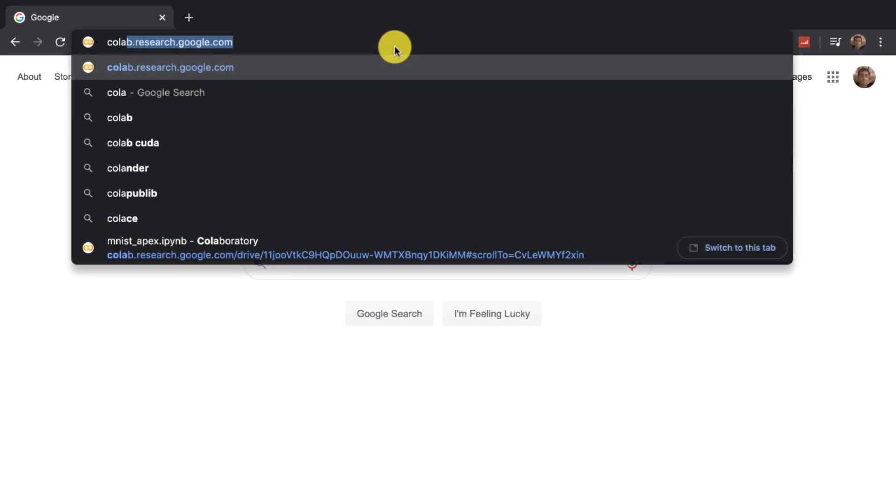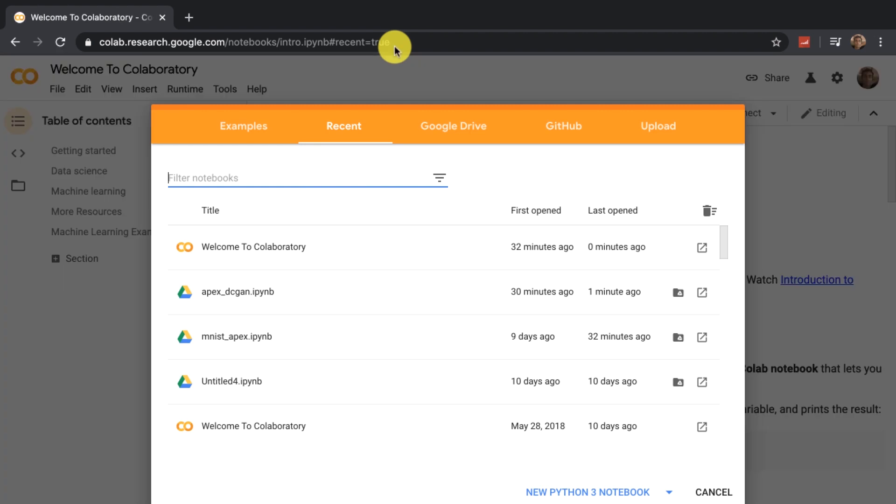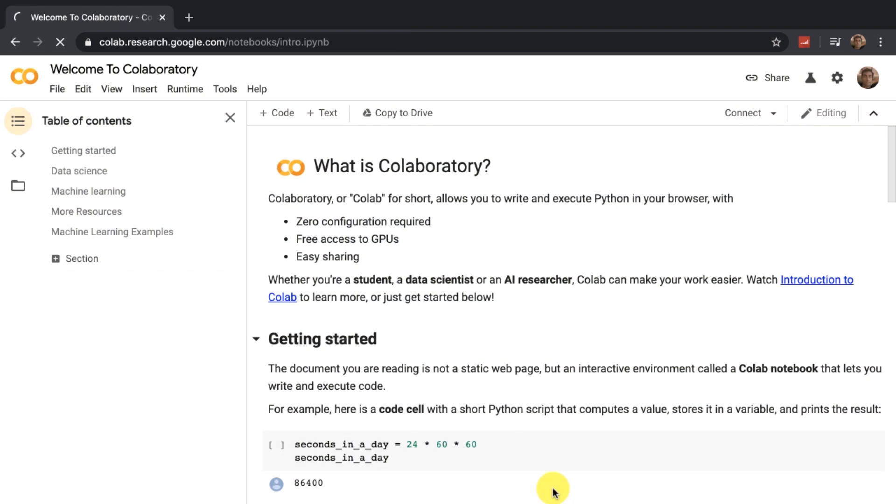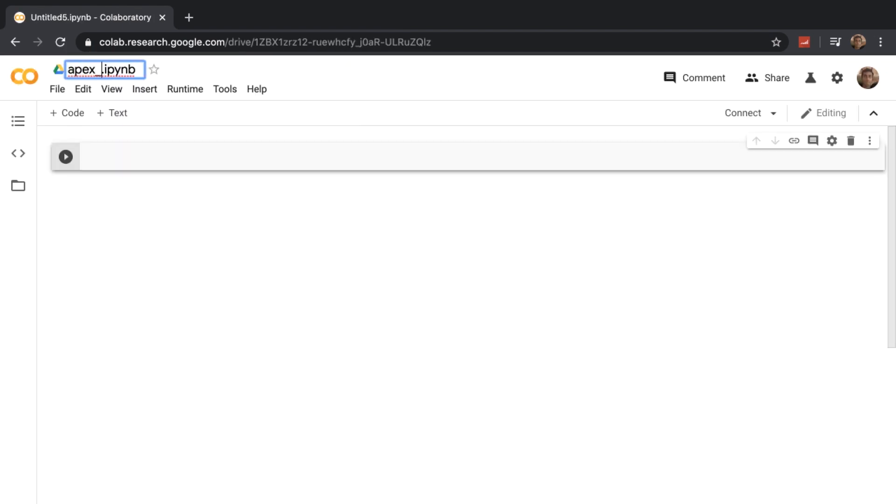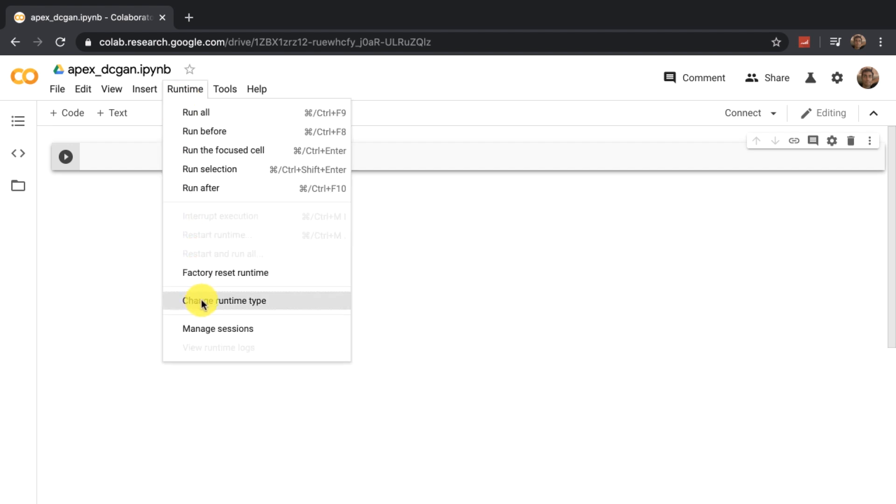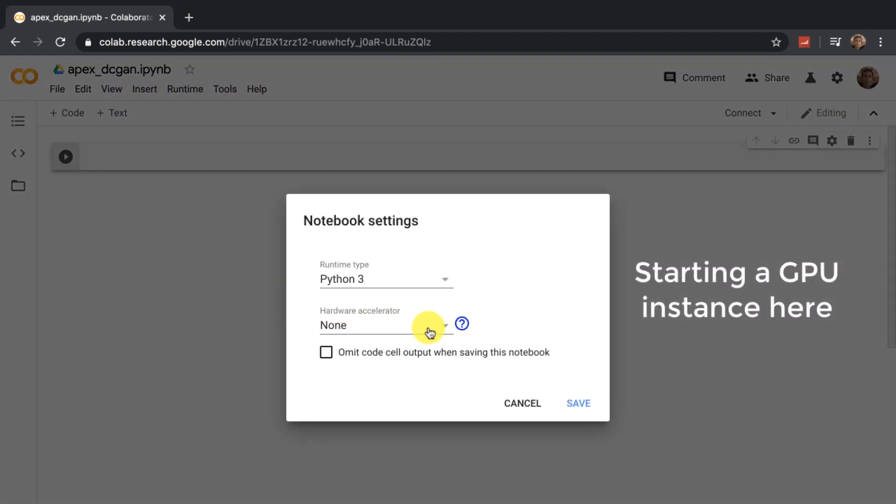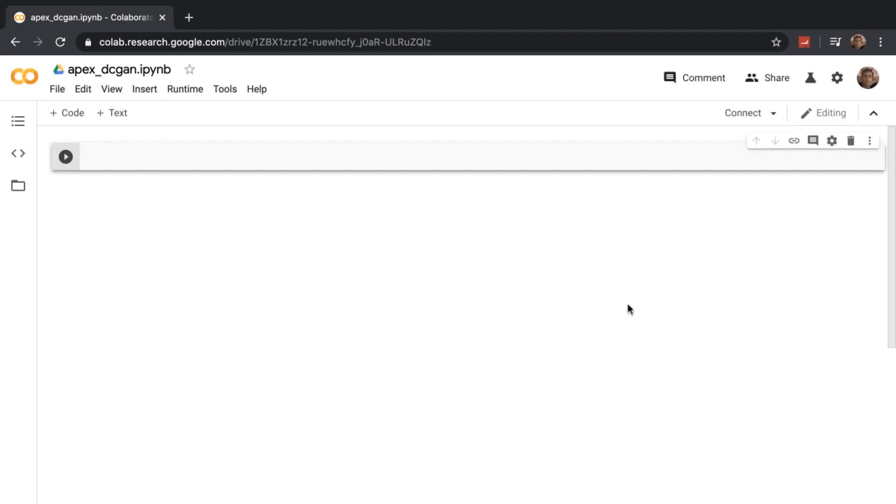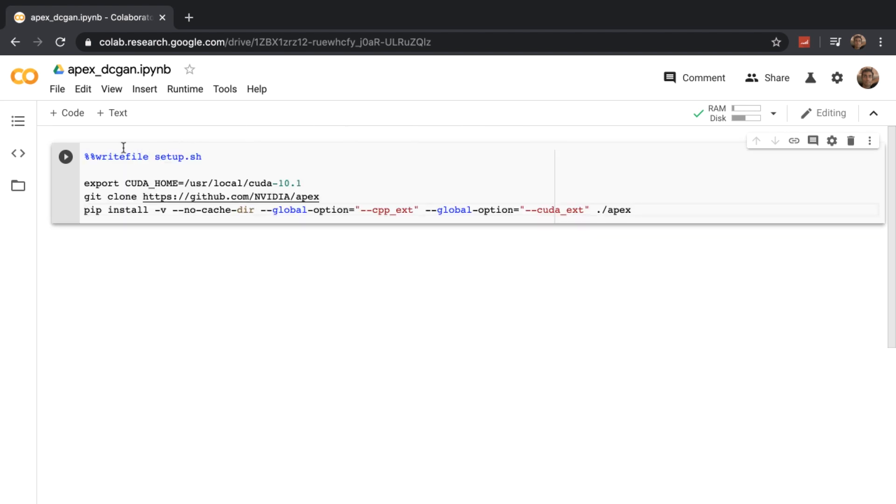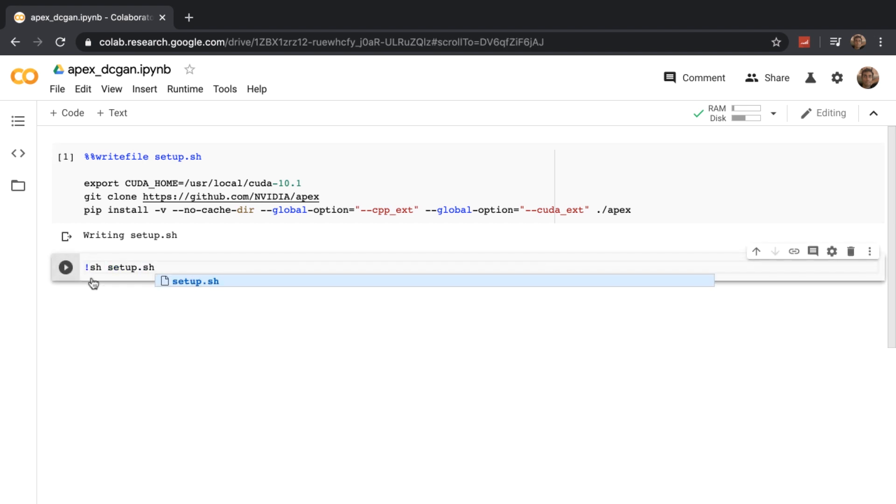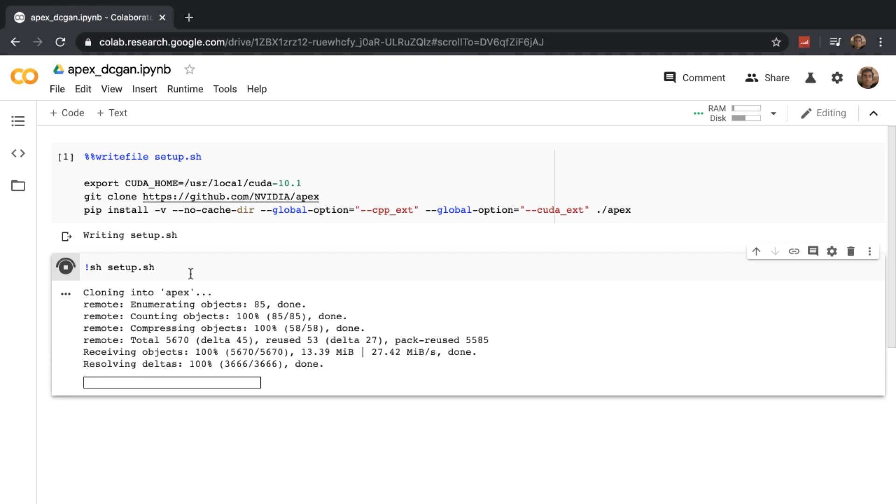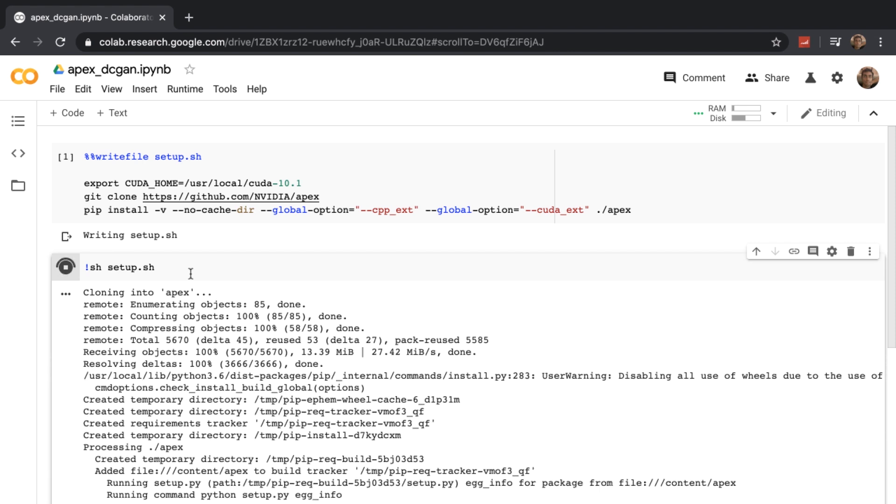Just go to colab.research.google.com and create a new notebook. You can name it whatever you want. We need to write four lines of code to get things running. I'll copy and paste them for now. This will clone the Apex repo and it creates the setup.sh file. Then we run this setup file. It may take a few minutes, but once it's up, you're all ready to go.